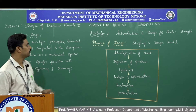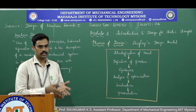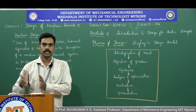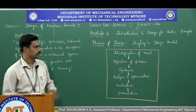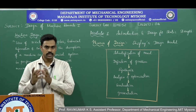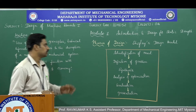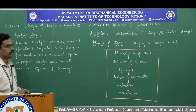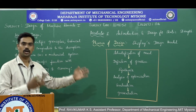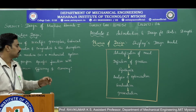We will get into the first module, whose title is Introduction and Design for Static Strength. In the introduction, you are going to learn about the definition of machine design, phases followed in machine design, engineering materials and their properties, and a review of stresses. The definition of machine design: use of scientific principles, technical information, and imagination in the description of a machine or mechanical system to perform a specific function with maximum efficiency and economy.